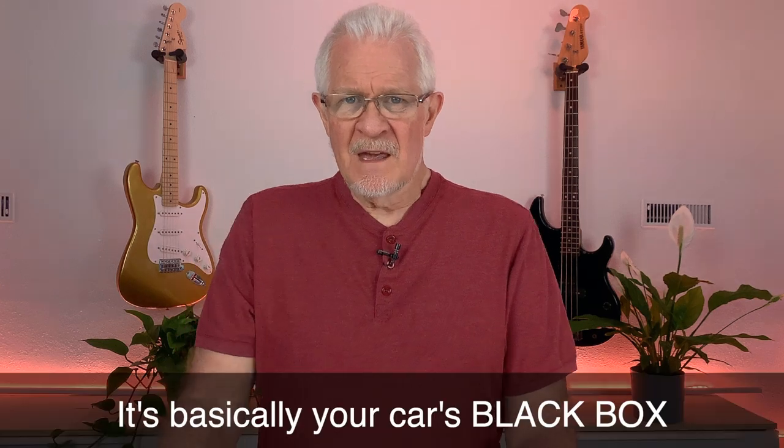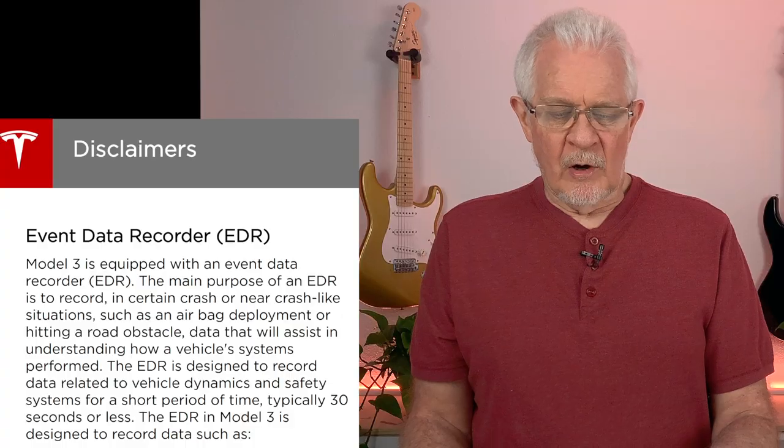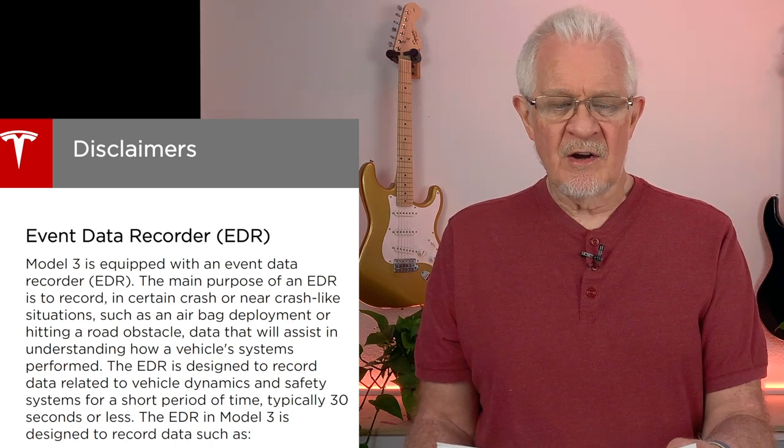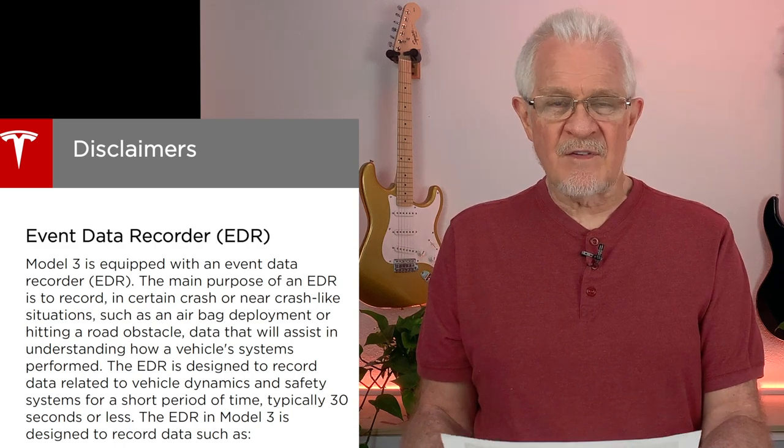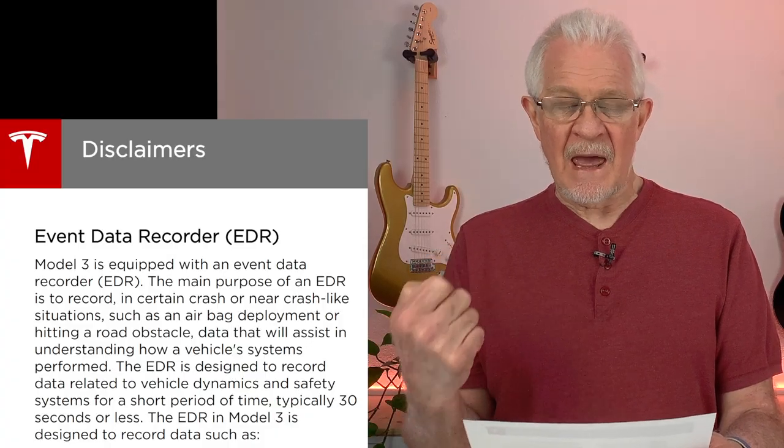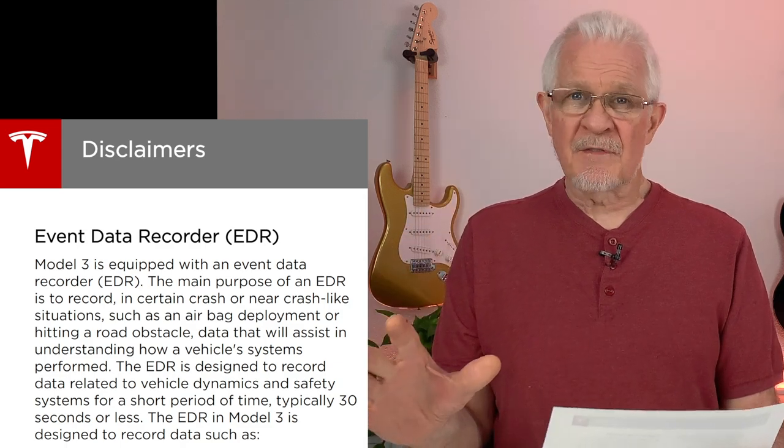The Event Data Recorder gathers up all of the information, the dynamics, and the system information that occur at the time of a significant impact — for example, if the airbags deploy. Let me read you the description in the manual: 'Model 3 is equipped with an Event Data Recorder. The main purpose of an EDR is to record in certain crash or near-crash-like situations, such as an airbag deployment or hitting a road obstacle, data that will assist in understanding how a vehicle's systems performed.' The EDR is designed to record data for a short period of time, typically 30 seconds or even less.